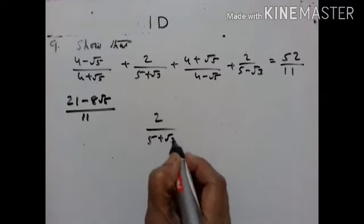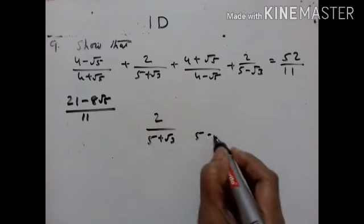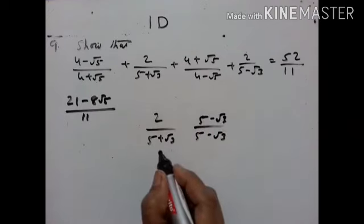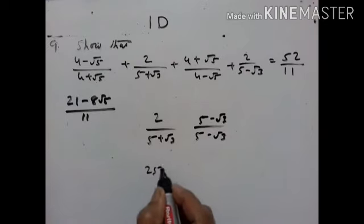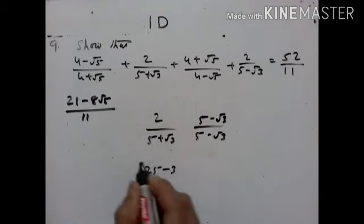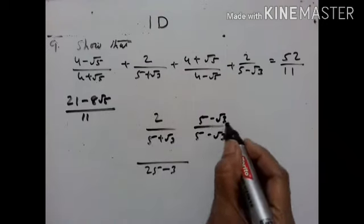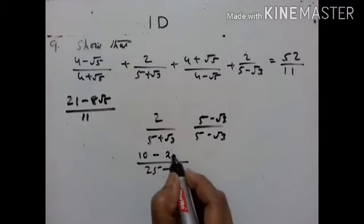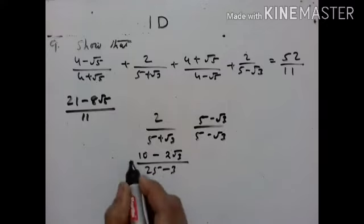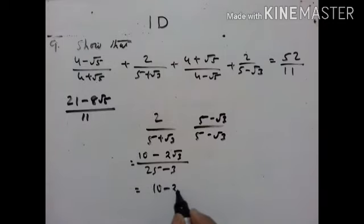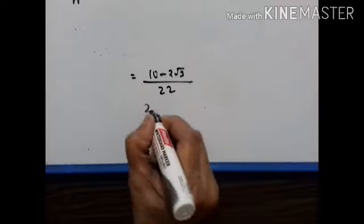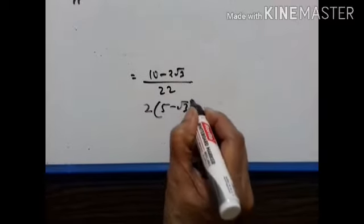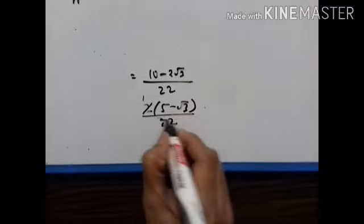Now take 2 upon (5 plus √3). Rationalize the denominator by multiplying by (5 minus √3). Using a²−b²: 5² minus (√3)² equals 25 minus 3 equals 22. The numerator is 2(5 minus √3) = 10 minus 2√3. Simplify by taking 2 common: (5 minus √3) upon 11.